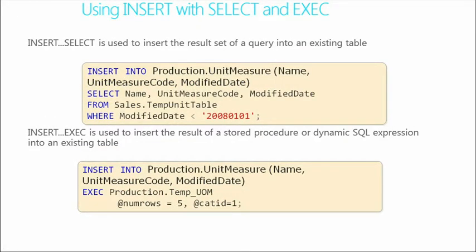We can also use INSERT INTO with a SELECT statement — an insert-select option. To populate the name, unit measure code, and modified date columns, we select those columns from a temporary unit table that exists. So we take content using a SELECT statement and populate it into the unit measure table. And we don't have to grab everything — because we're using a SELECT statement, we could say we only want to insert content from before January 1, 2008, so we still have control of what content gets added.